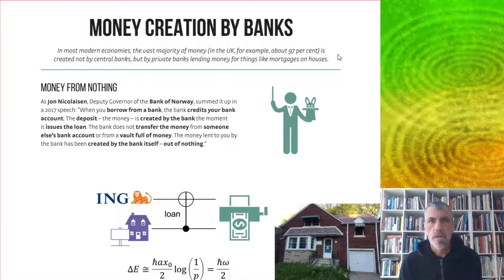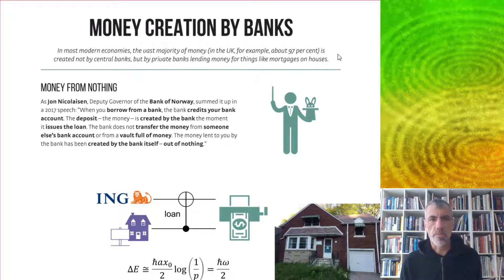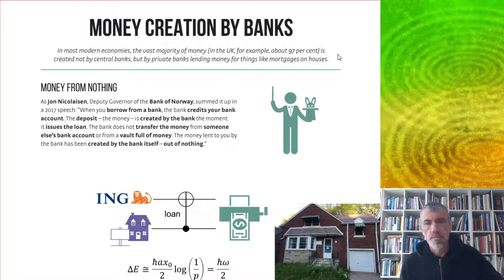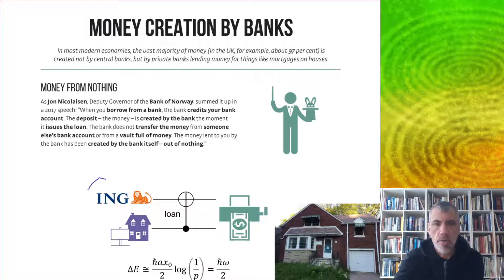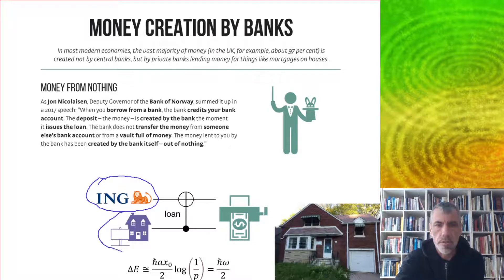Where does this energy come from? Most money is created not by central banks but by private banks lending money for things like mortgages on houses. As the deputy governor of the Bank of Norway explained in a 2017 speech: when you borrow from a bank, the bank just credits your bank account. The bank does not transfer the money from somewhere else, from someone else, or from a vault — it's simply created by the bank itself out of nothing. We've already seen this process with the medieval tally stick, so now instead of a sovereign with the divine right of kings, we have your local bank making a loan to someone who wants to buy a house.